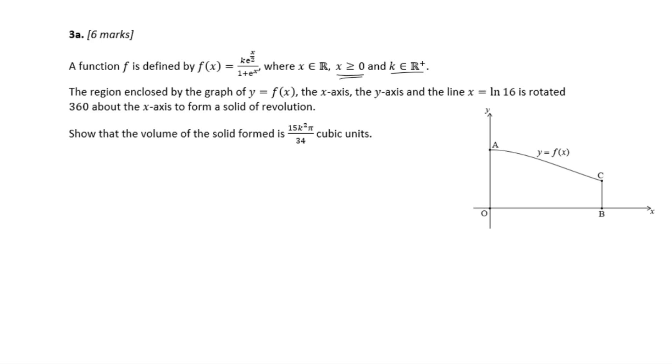The region enclosed by the graph of f of x, the x-axis, the y-axis and the line x equals natural log of 16 is rotated 360 degrees about the x-axis to form a solid of revolution. Show that the volume of the solid formed is 15 k squared pi over 36 cubic units.